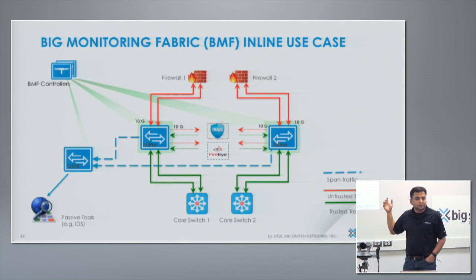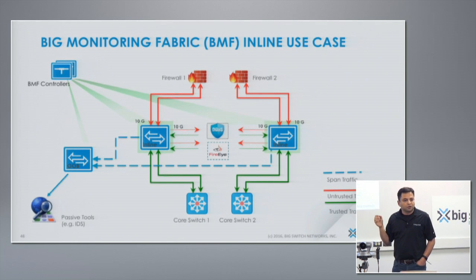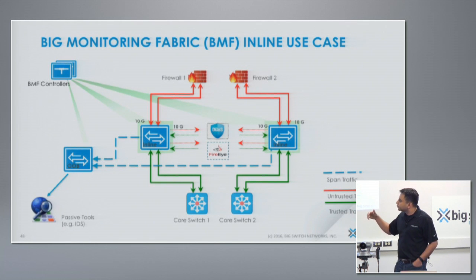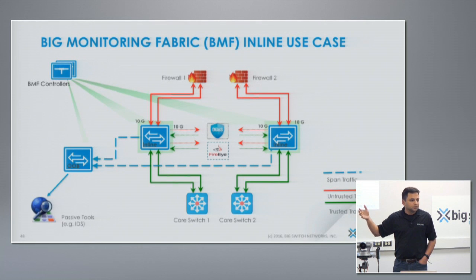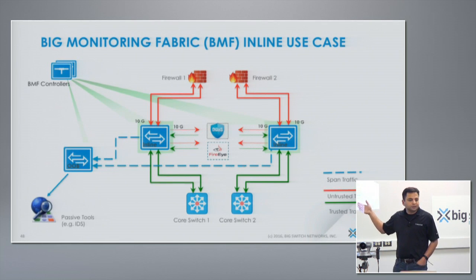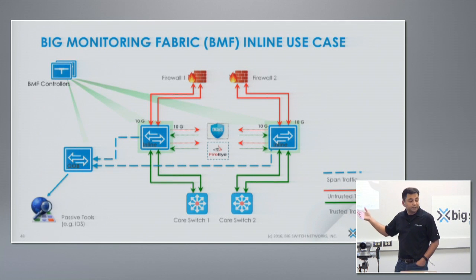We'll show you in this demo how easy it is to create a chain and insert services in the chain. Optionally, you can also send a copy of the production traffic to an out-of-band switch, which can feed multiple tools — for example, if you want to send a copy to five security appliances. You can simply use the inline switch as an active tap and send a copy to an out-of-band switch.